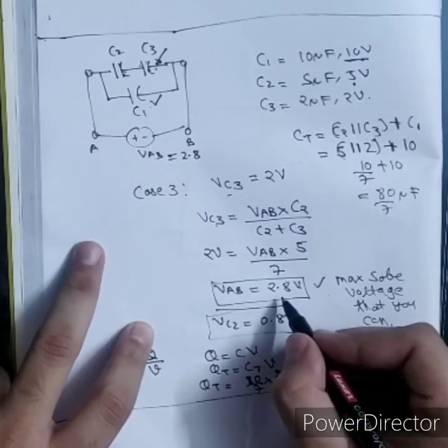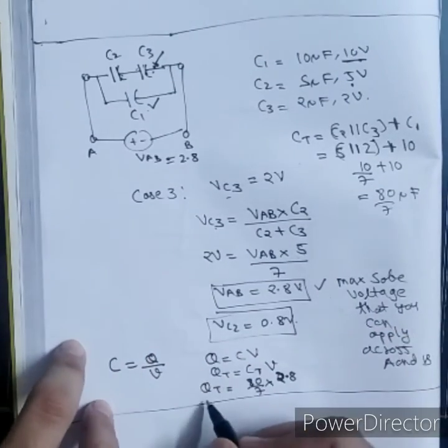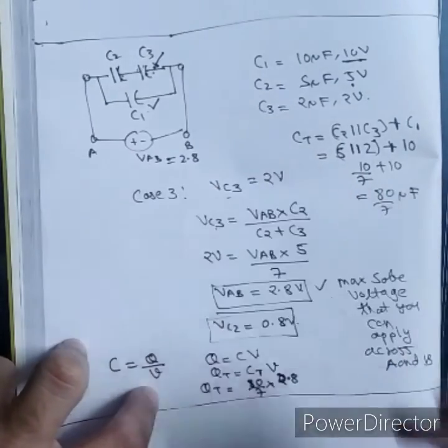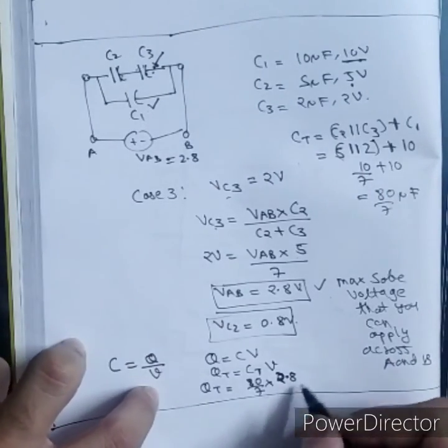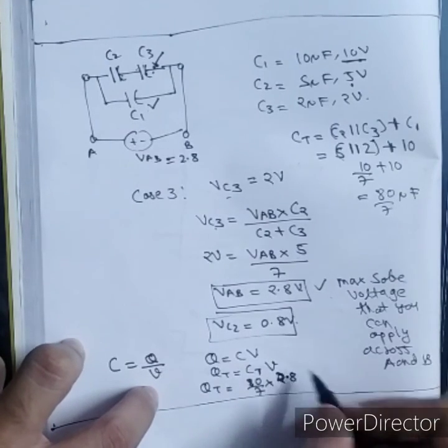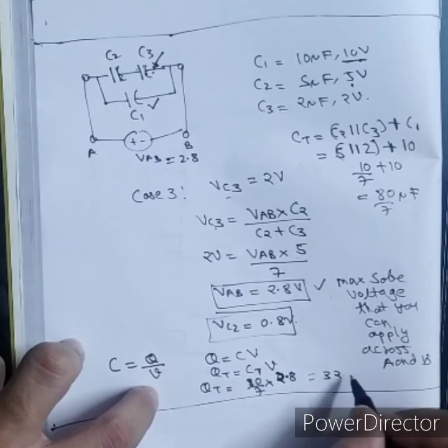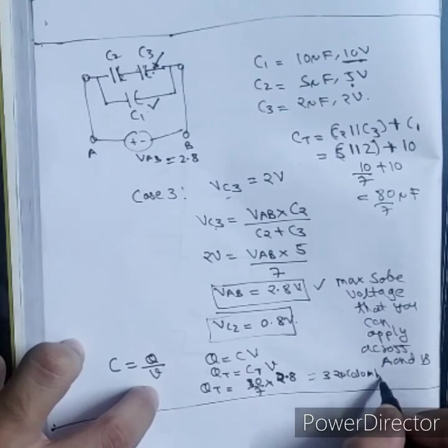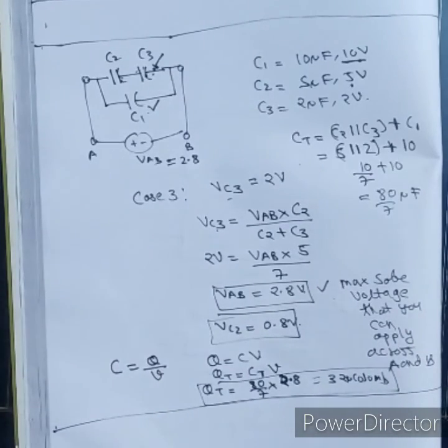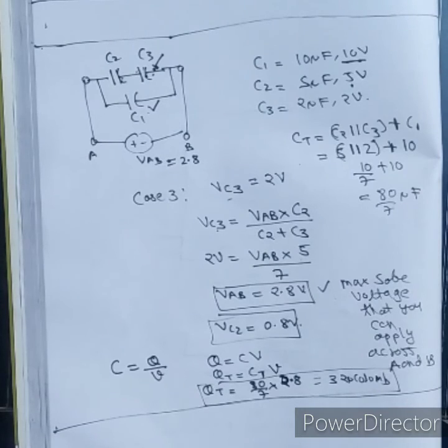Because V we calculated as 2.8, we have to find total charge stored if we apply that safe voltage. 80 by 7 into 2.8, this is 0.4, 8 into 4, that is 32 coulombs, micro coulombs. QT is 32 micro coulomb. This was the solution for this.